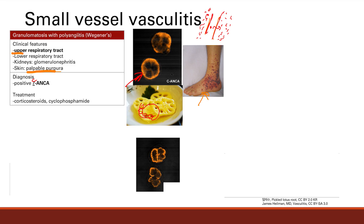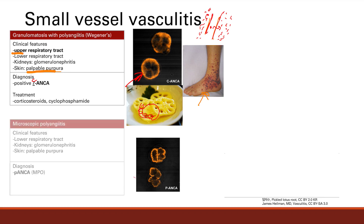Next is microscopic polyangiitis. It's very similar to Wegener's, except there is no upper respiratory tract involvement. You still have lower respiratory tract involvement with coughing and coughing up blood, kidney involvement with hematuria and red cell casts, and palpable purpura on the skin. The diagnosing antibody here is P-ANCA, not C-ANCA.